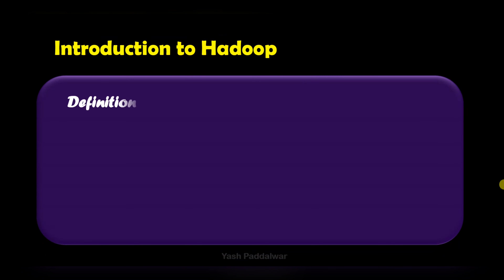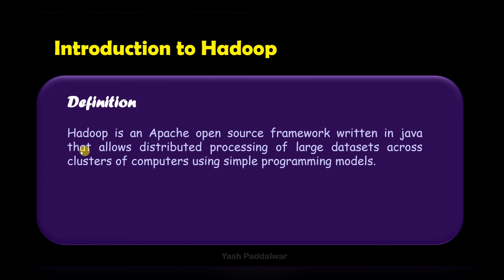Here is the definition of Hadoop. Hadoop is an Apache open source framework written in Java that allows distributed processing of large datasets across clusters of computers using simple programming models. That's quite a long definition, so let's break it and see each part of it one by one.